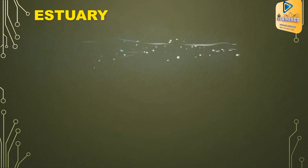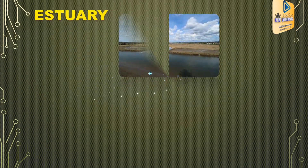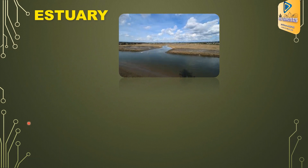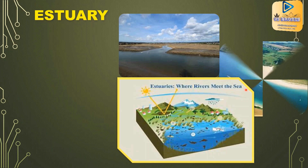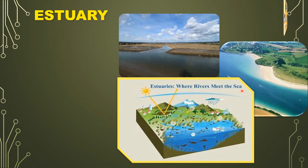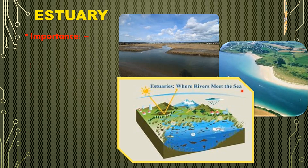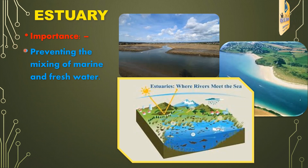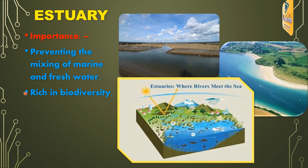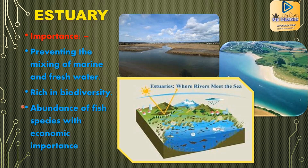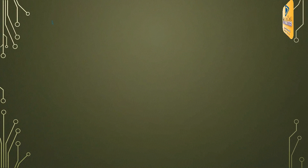Then about estuaries. The place where a river flows into the sea is known as an estuary. An example is the Mahaweli estuary, which extends to Koddiyar Bay and Tambalagam Bay. Importance of estuaries includes preventing the mixing of marine and fresh water, being rich in biodiversity, and having an abundance of fish species with economic importance.